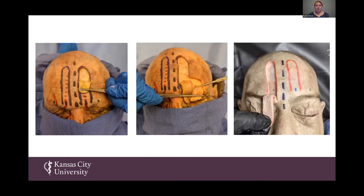Here you can see some stages of creating this flap. We started at the top and pulled down, working with the freer elevator to lift the periosteum off the bone, then created a black dot once we found the pedicle to mark it. Because some of the measurements were lower, we did have to free the flap all the way.